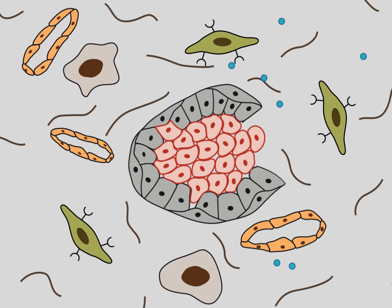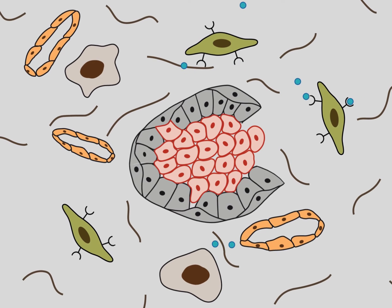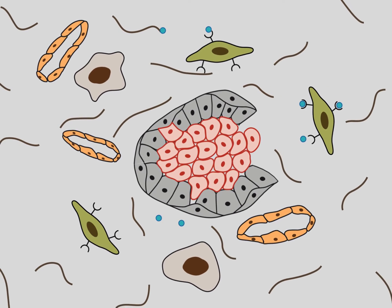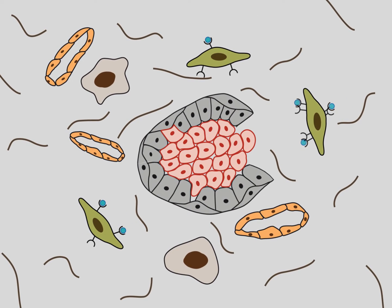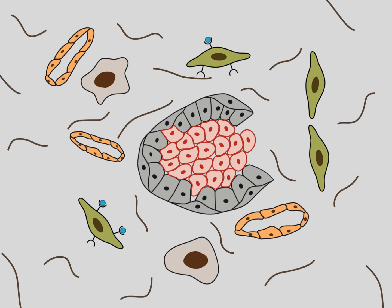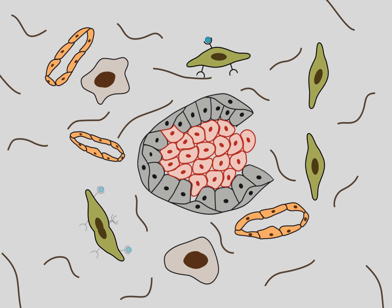In the present example, tumor cells release platelet-derived growth factor, PDGF, which stimulates the proliferation of tumor-associated fibroblasts.